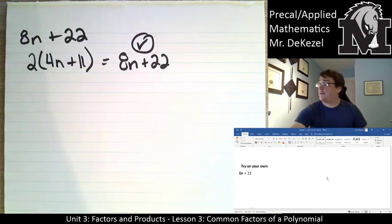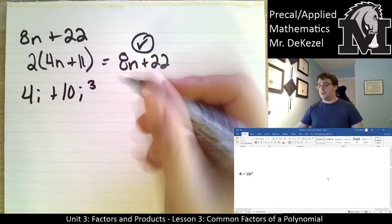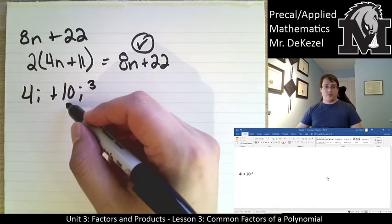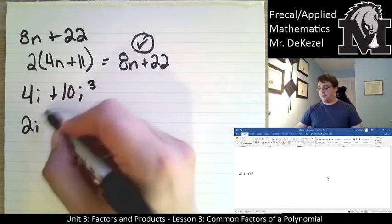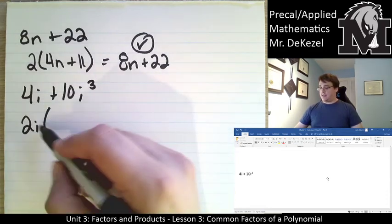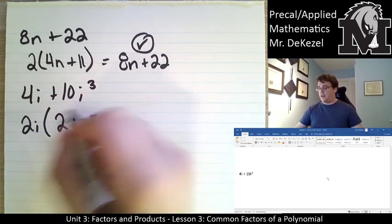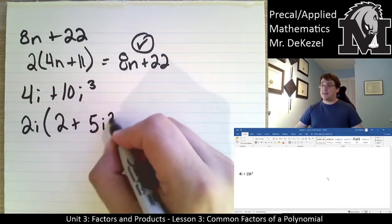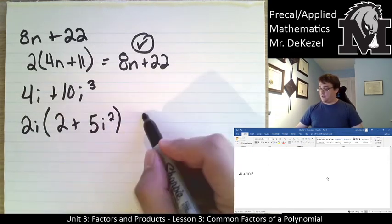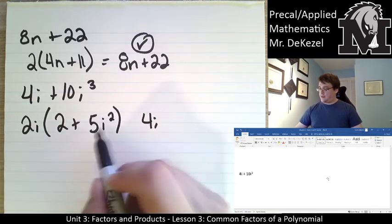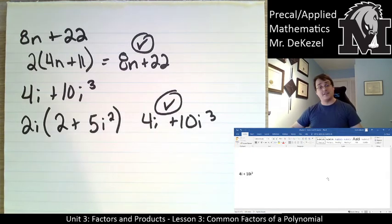Next: 4i plus 10i cubed. The common number factor is 2, and there is a single i common between both terms, so we factor out 2i. What times 2i gets 4i? Just 2. What times 2i gets 10i cubed? That's 5i squared. So: 2i times (2 plus 5i squared). Check: 2i times 2 is 4i, and 2i times 5i squared is 10i cubed. That matches — correct.